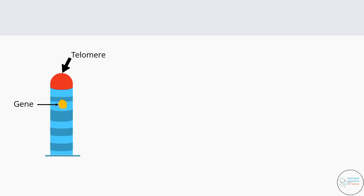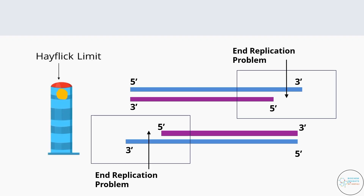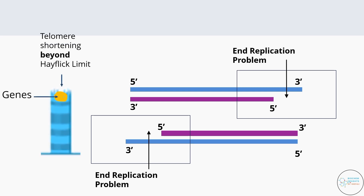To summarize: telomeres are located at both ends of linear chromosomes and prevent the loss of genes during DNA replication, maintaining the structural integrity of chromosomes. But due to the end replication problem, when a telomere reaches the Hayflick limit it leads to aging, and further shortening beyond the Hayflick limit causes chromosomal instability and eventually mutation. Fortunately, nature has provided us with the enzyme telomerase to maintain the length of the telomere.